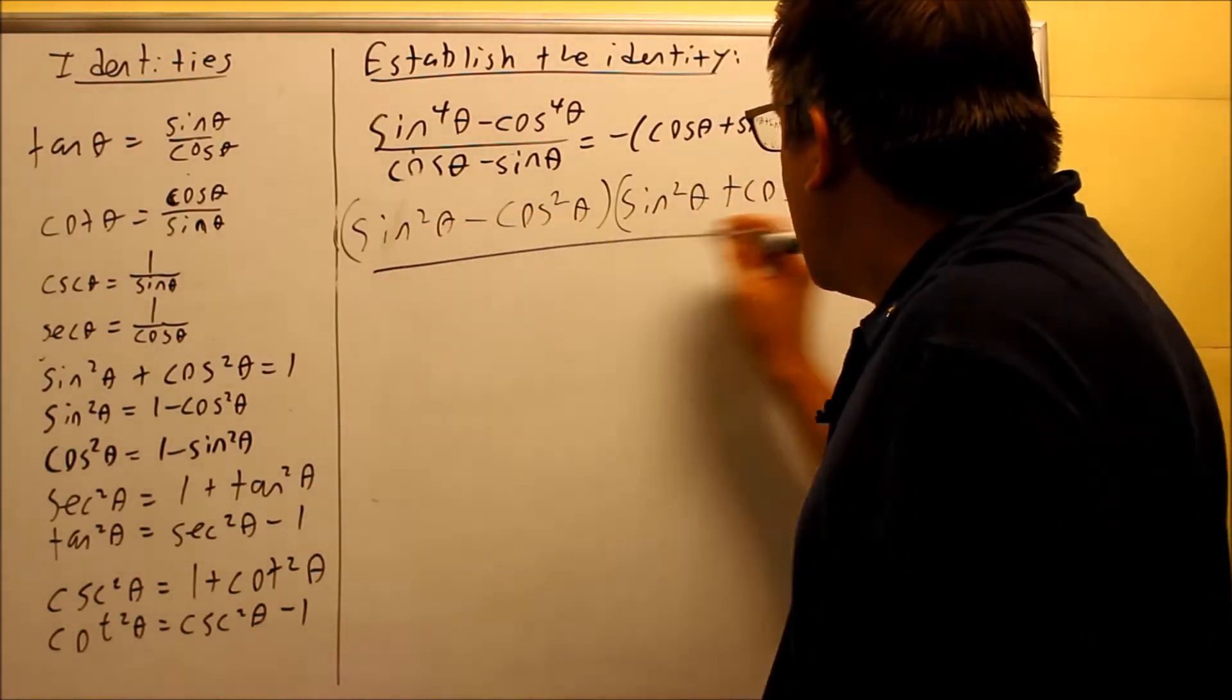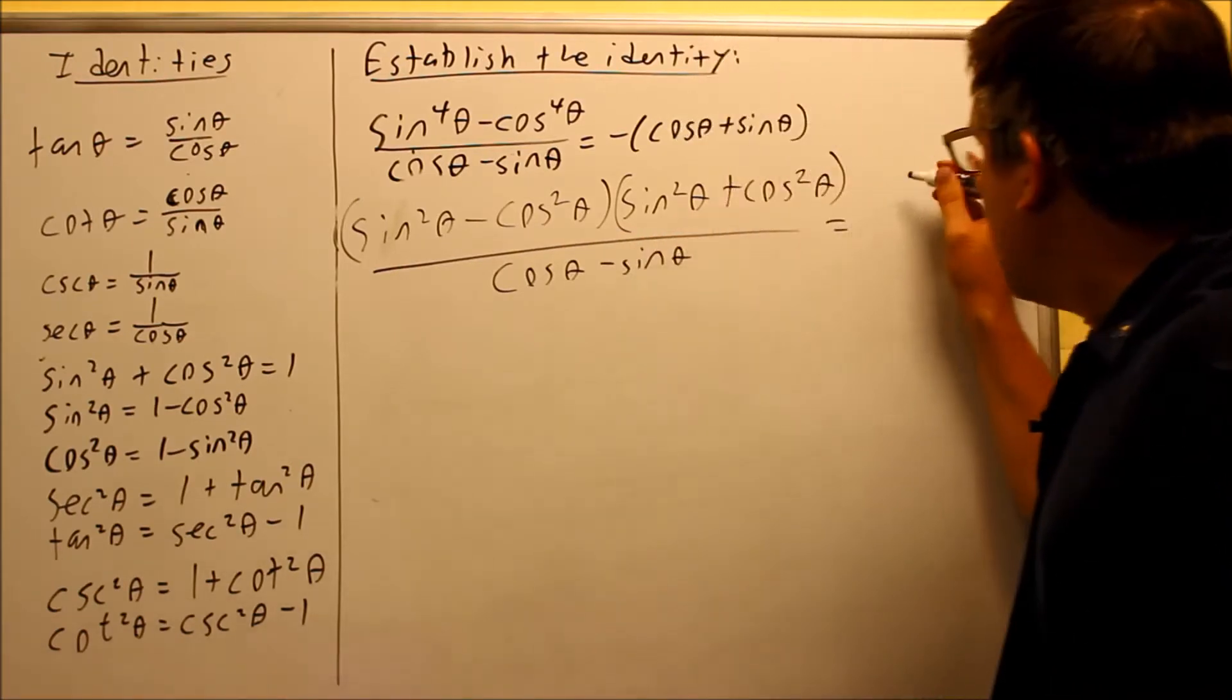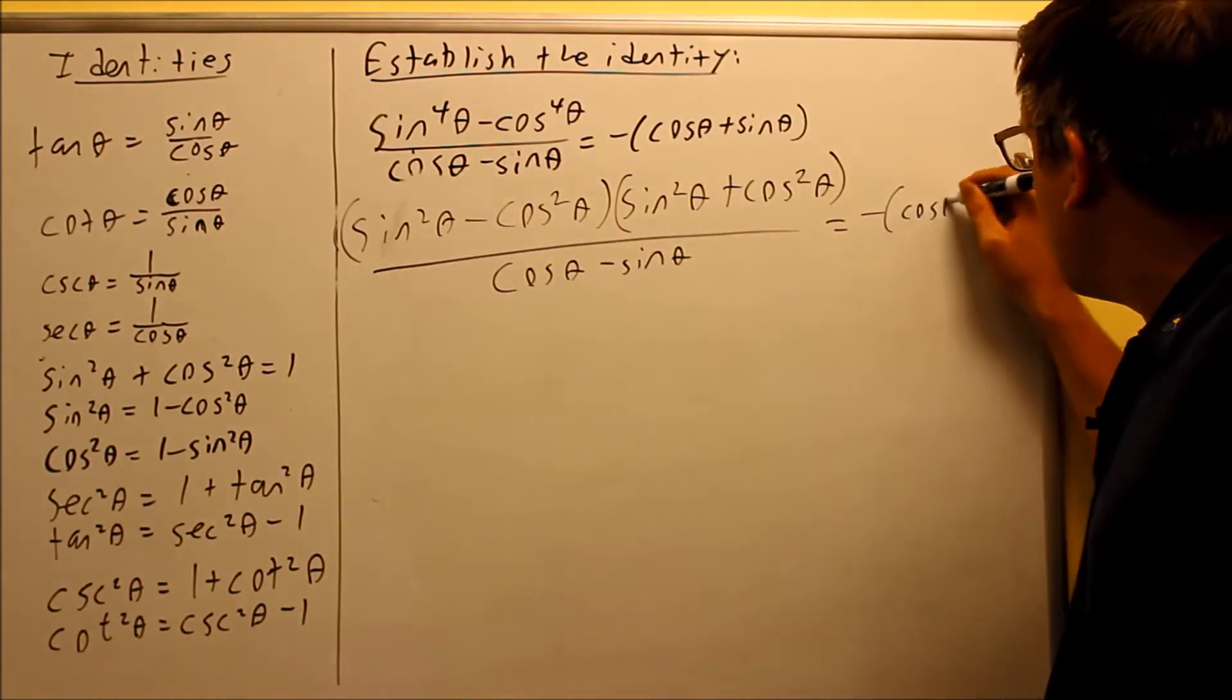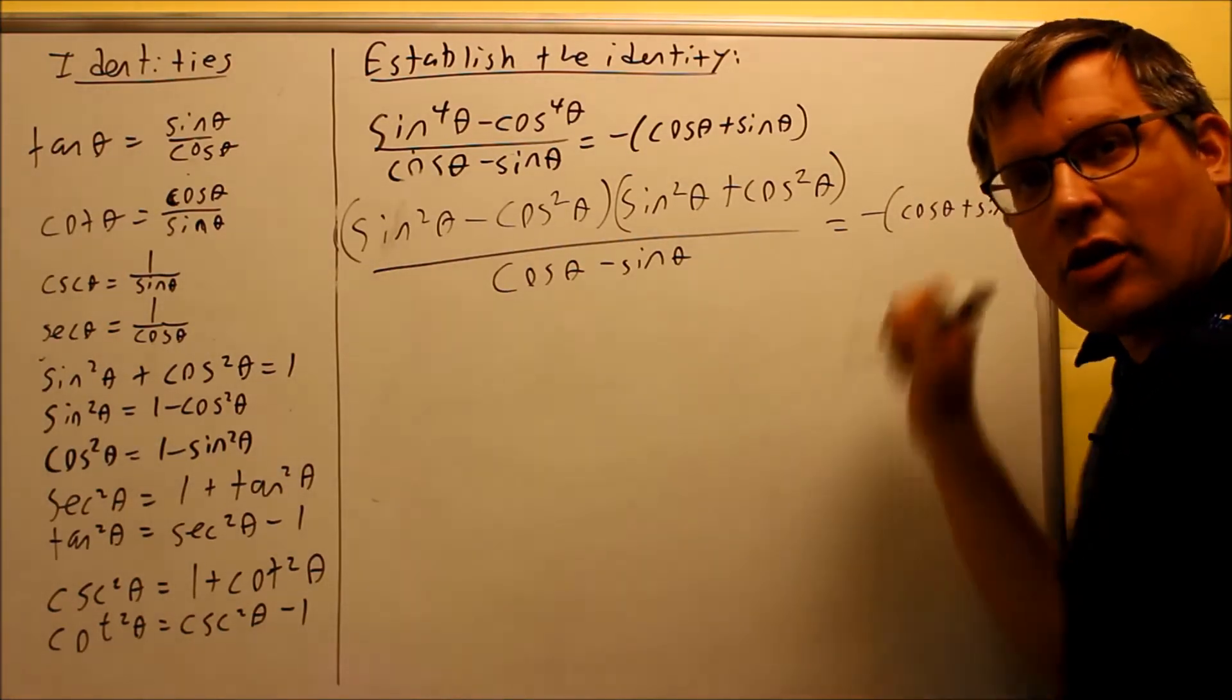On the bottom, I have cosine theta minus sine theta, and on the other side, I haven't done anything with this yet. So I'm going to just rewrite the right hand side and carry that down all the way.